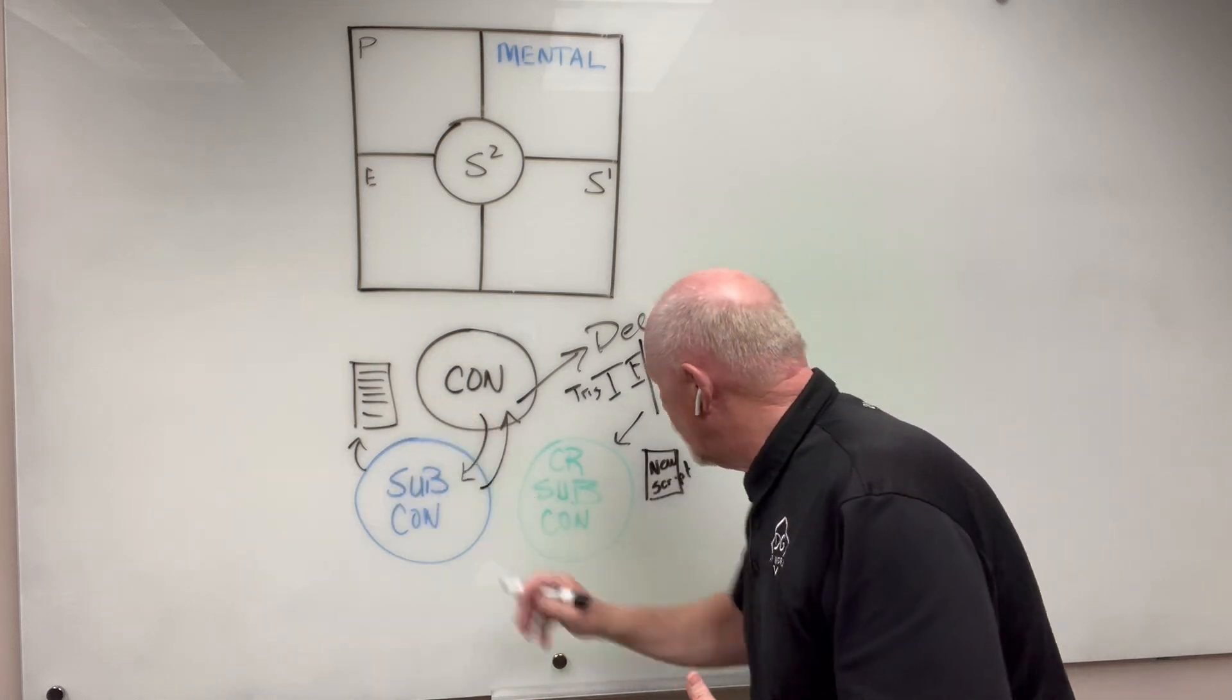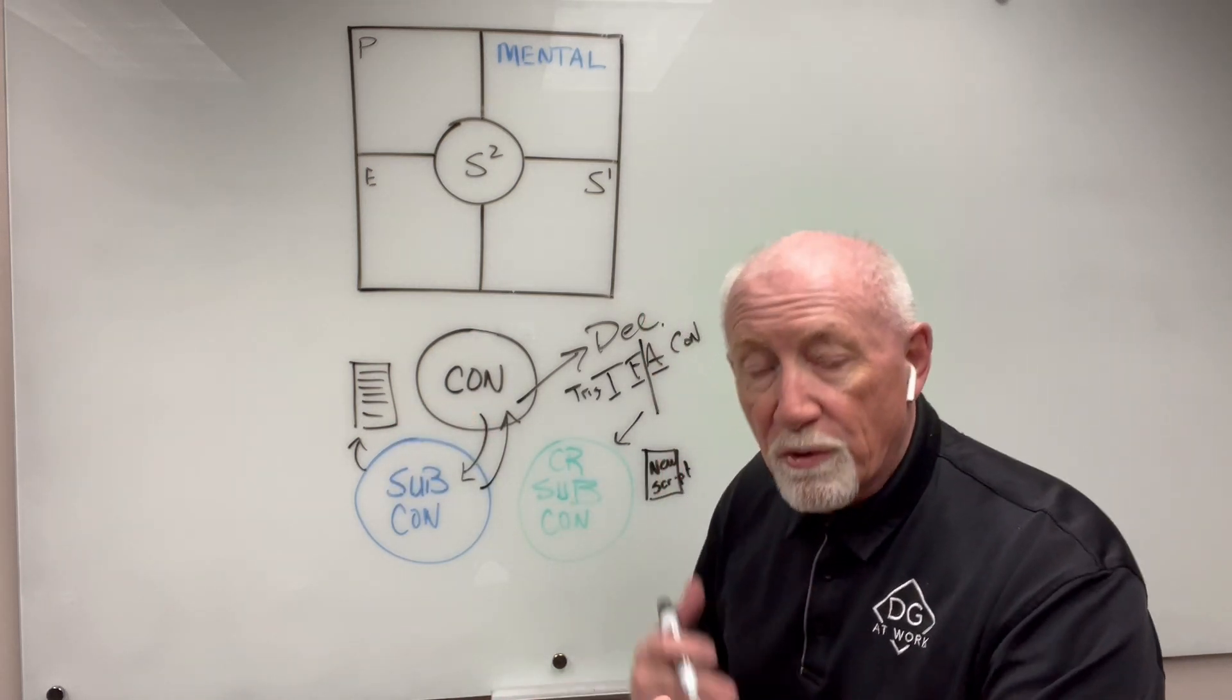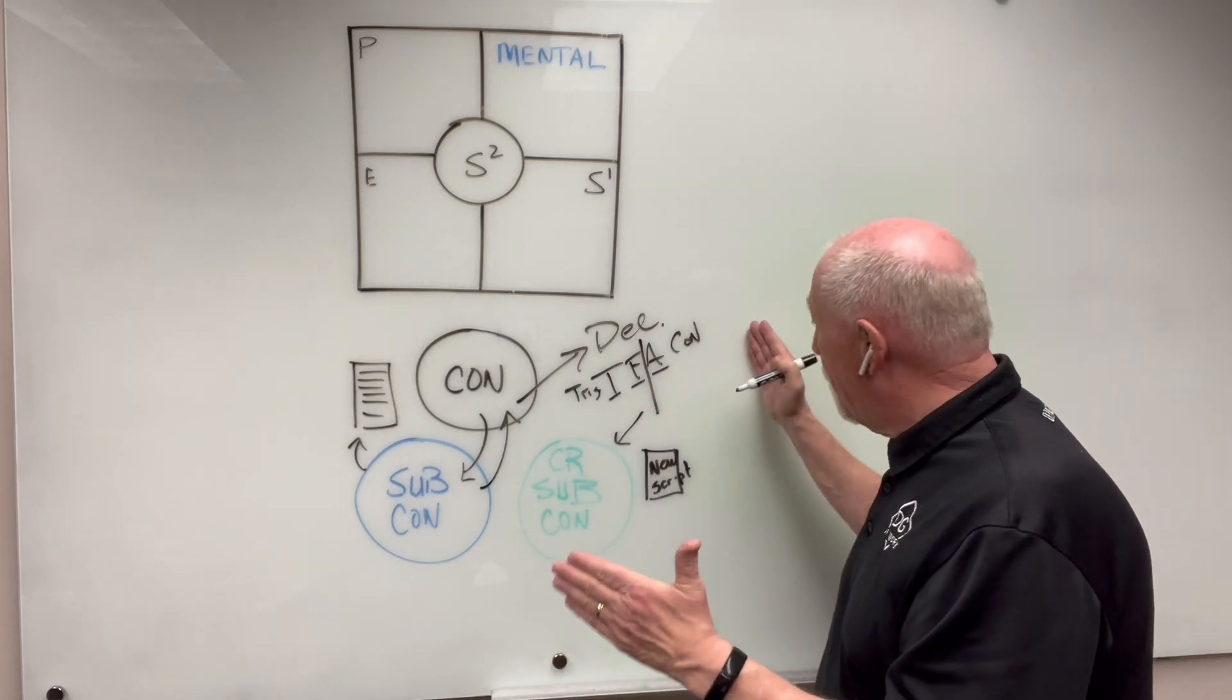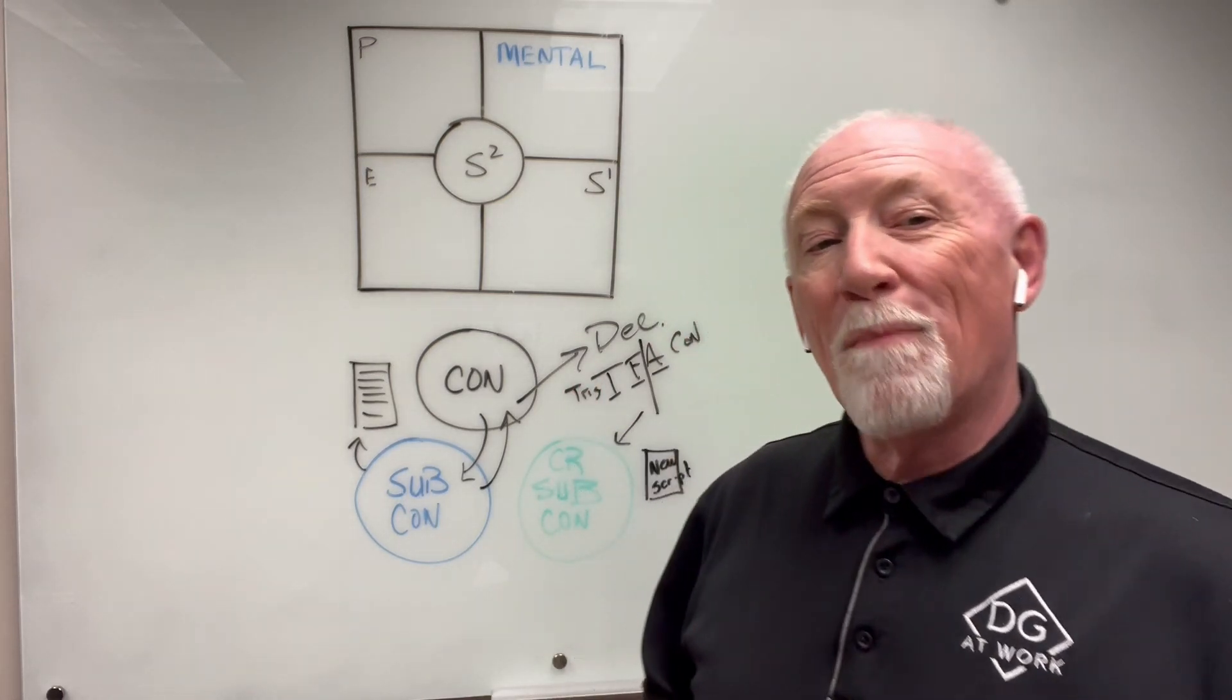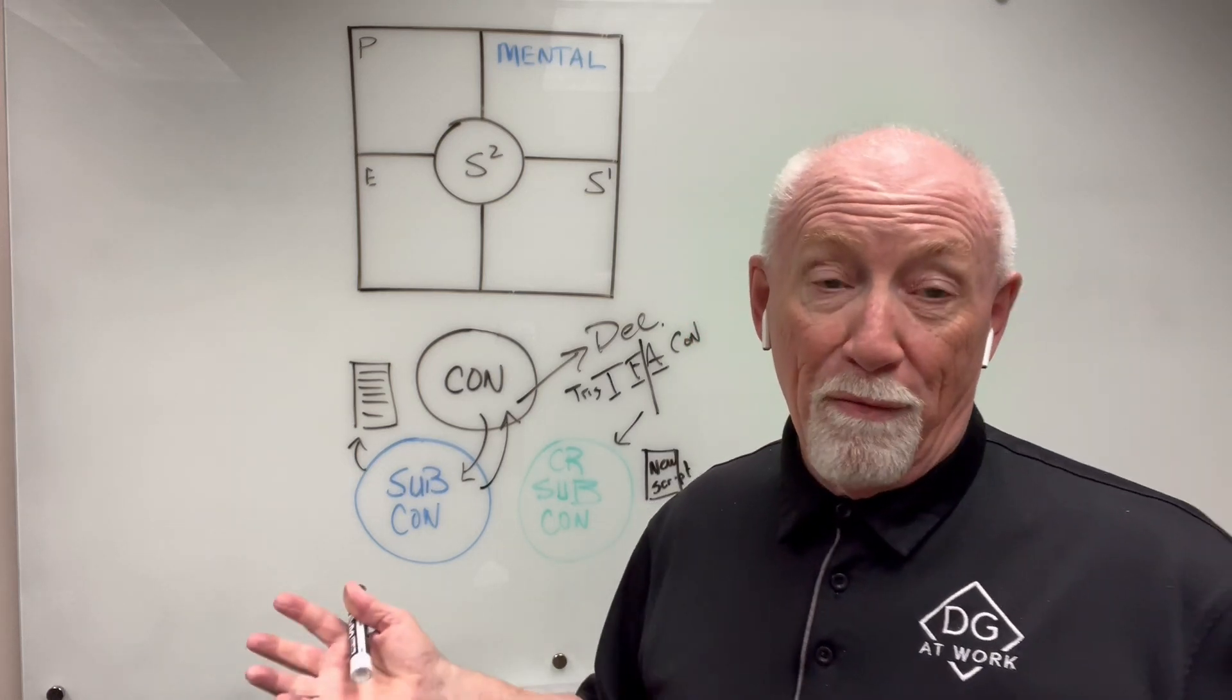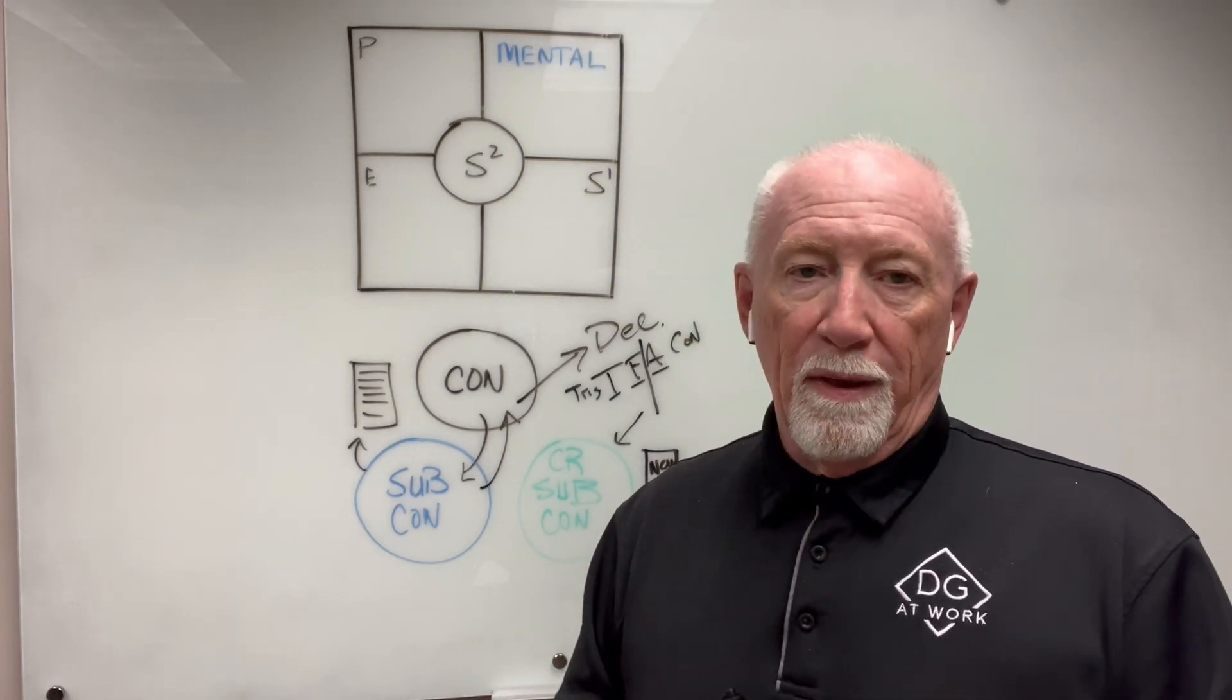Instead of acting out of the record, negative or positive, you can go to the creative subconscious and begin to run the new script. When you run the new script, you override the bad outcomes and you start moving toward the new outcomes. I know that's a lot to think about today. Inside the little document that we sent you is a diagram of this that you can either print out, take a look at, but always remember this.